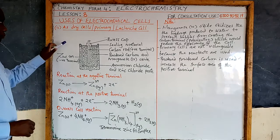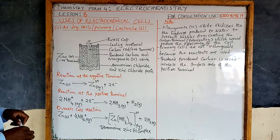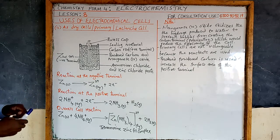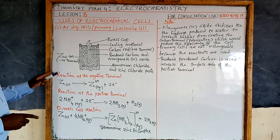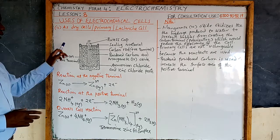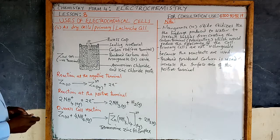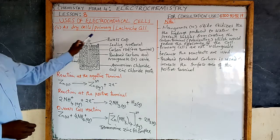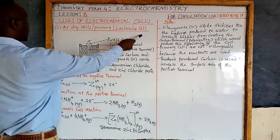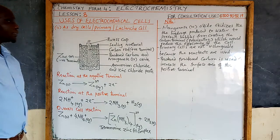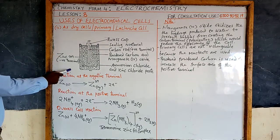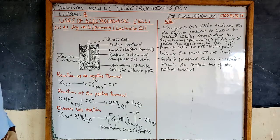One of the applications is that electrochemical cells are used as dry cells — they are modified to make what you call dry cells. Dry cells are also called primary cells. And the general structure of primary cells is this one.